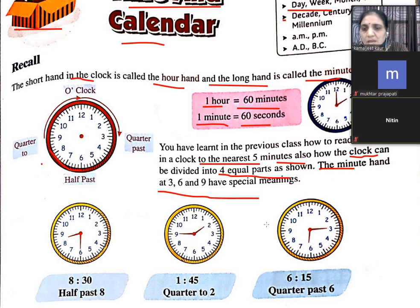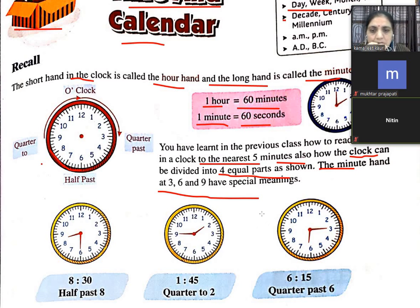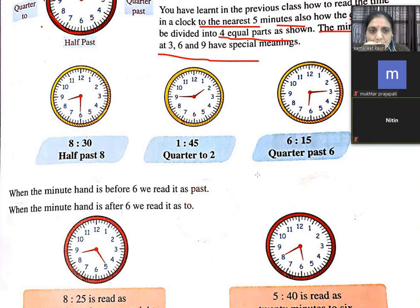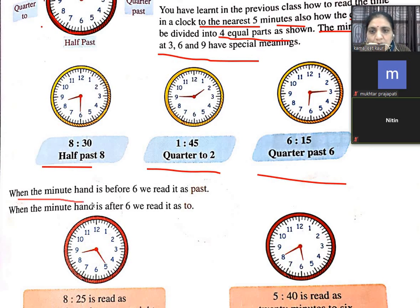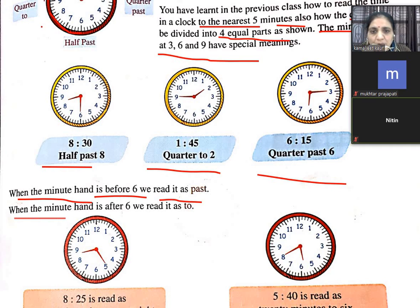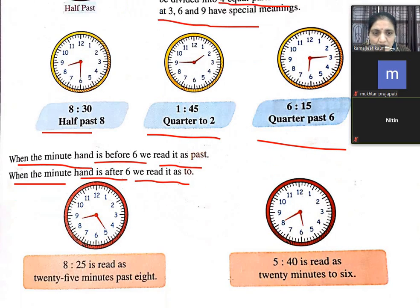6 is half past, 9 is quarter to. When the minute hand is before 6, we read it as past. If after 6, then we also read it as 'to'. जैसे — 6 के बाद वाले को 'to' यूज़ करते हैं।